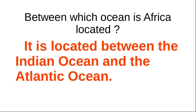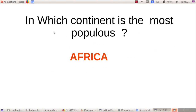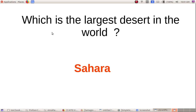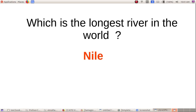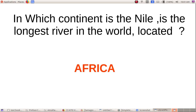Africa is located between the Indian Ocean and the Atlantic Ocean. The largest desert in the world is the Sahara, and it is located in Africa. The longest river in the world is the Nile, which is also located in Africa.